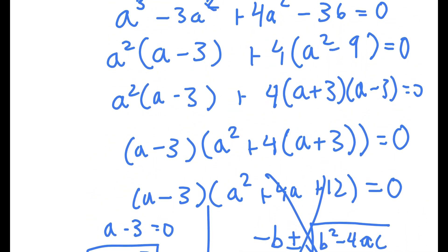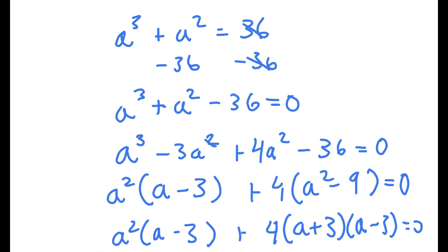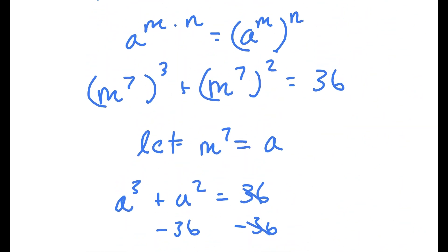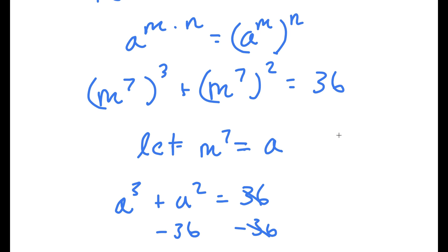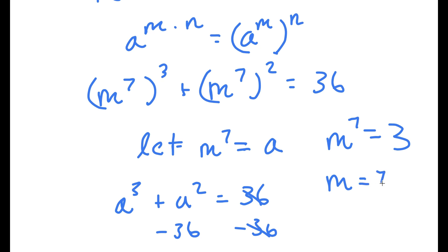Remember we let m to the power of 7 equal a. So now we have m to the power of 7 is equal to 3, meaning m is equal to the 7th root of 3.